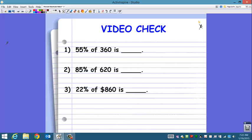You're going to work these questions on your video checklist that will be turned in at the end of the week. Number one, what is 55% of 360? Number two, 85% of 620. And number three, 22% of 860 dollars. Again, there's no right or wrong way, well there's a wrong way, but there's more than one right way of coming up with 55%. So we want to see the way you come up with 55%. So just like we broke it down on the previous examples, you need to break it down as well on your checklist.